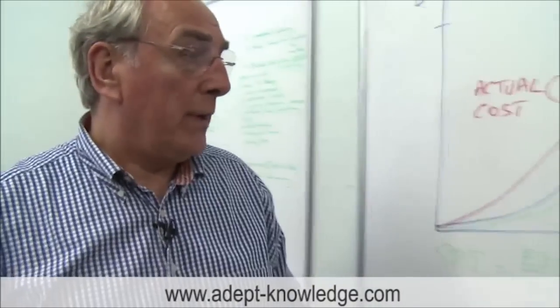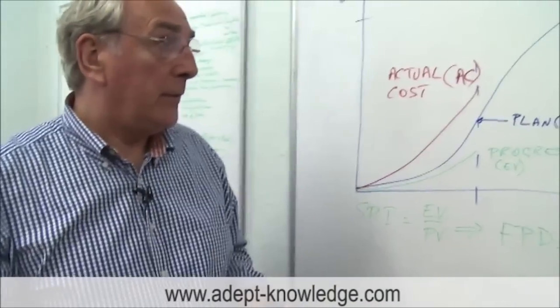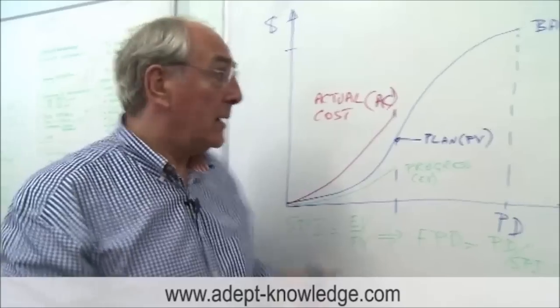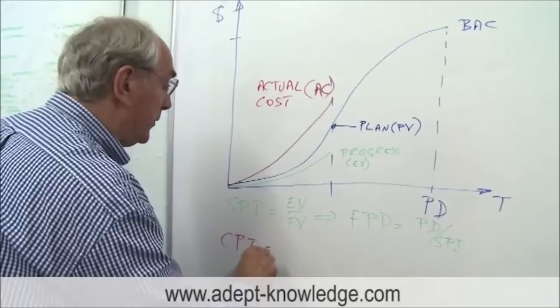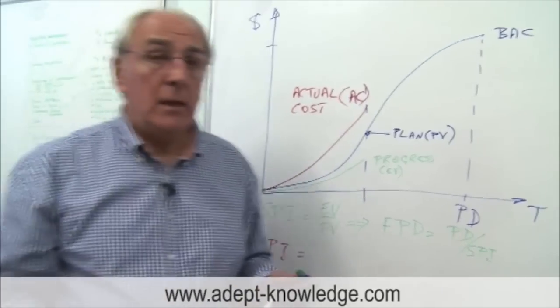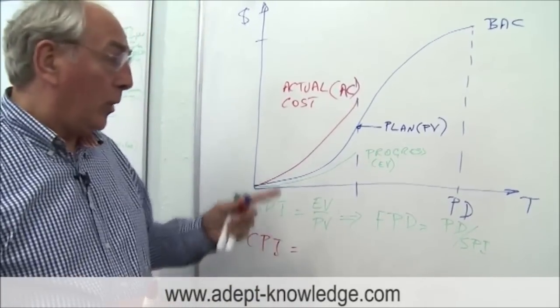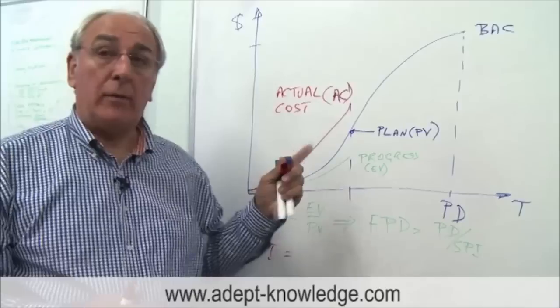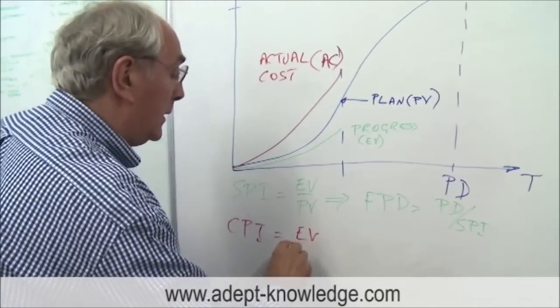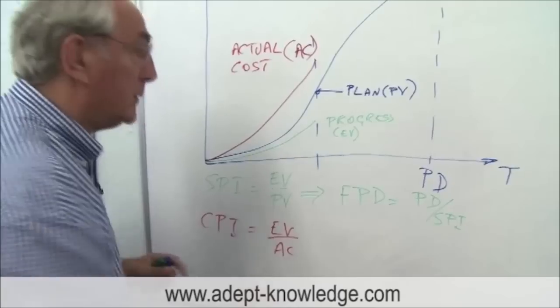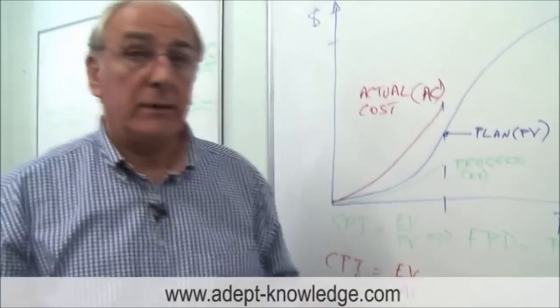So we can now measure what I talked about as being the cost performance index and that cost performance index some people call that productivity or efficiency and what we're saying is what did we get for what we spent? Well what we got was the earned value. So that's our earned value divided by our actual cost. So that's our efficiency or productivity.